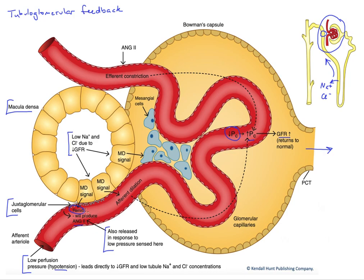The renin secretion will eventually lead to the production of angiotensin II. What we find is that angiotensin II is going to act largely on the efferent vessel and cause constriction. This will also enhance PC — creating back pressure in the glomerular capillaries — which brings PC up and brings GFR back up to normal.